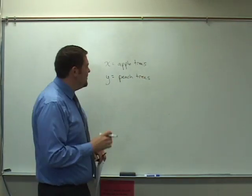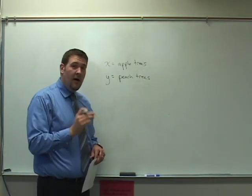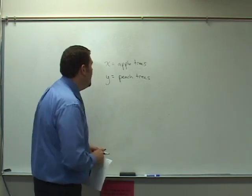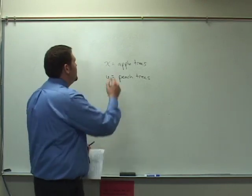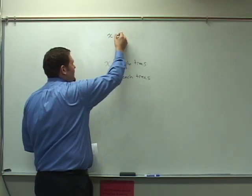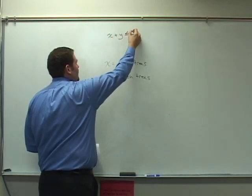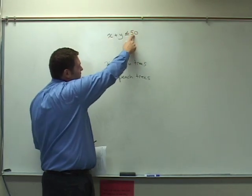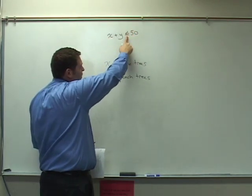Now we'll set up our system. The first thing we know is that we're going to have up to 50 trees, no more than 50 trees. 50 could be included. So we're going to set up our first linear inequality as x plus y is less than or equal to 50. This shows the combinations of x and y's that will strictly be less than 50 or equivalent to 50.